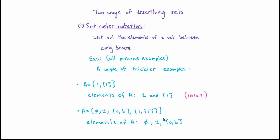Even though the set containing A and B has two objects inside it, the set by itself is just one object and counts as one element of capital A. To emphasize this: little a is not an element of capital A, and little b is not an element of capital A. The set containing little a and little b is an element of capital A, and little a and little b are elements of that set — but being an element of a set is not in general a transitive property. The final element of A is the set containing 1 and the set containing 1, making the cardinality of capital A equal to 4.